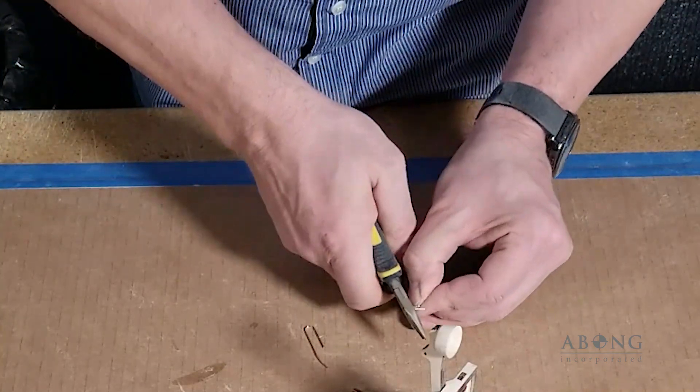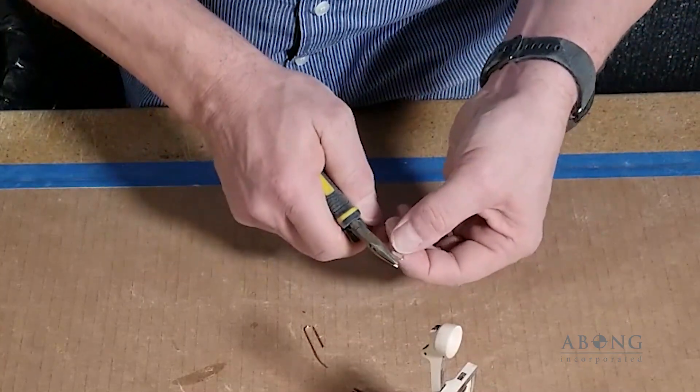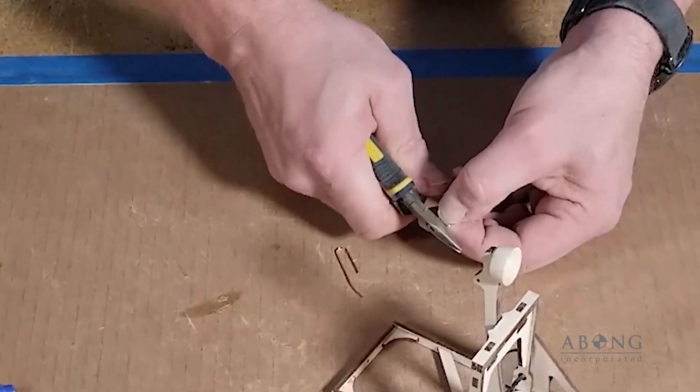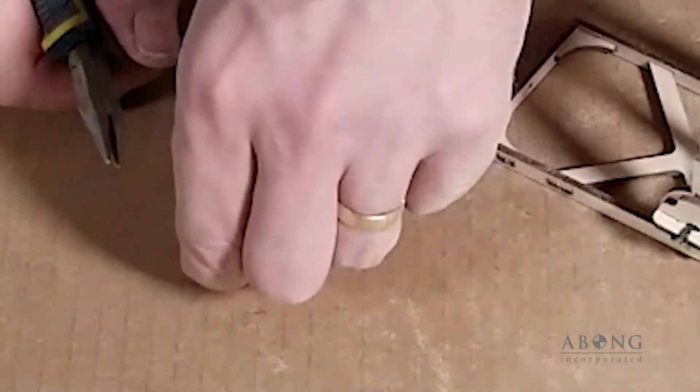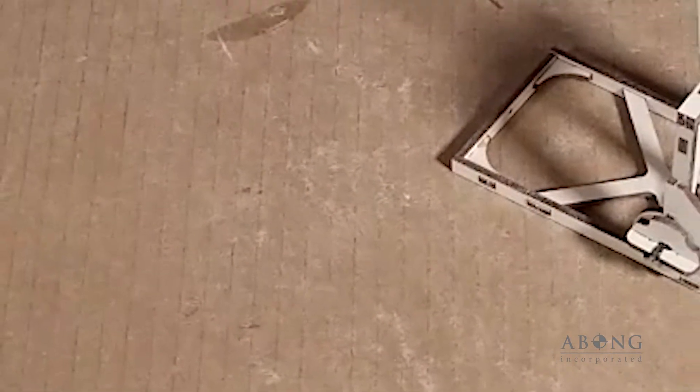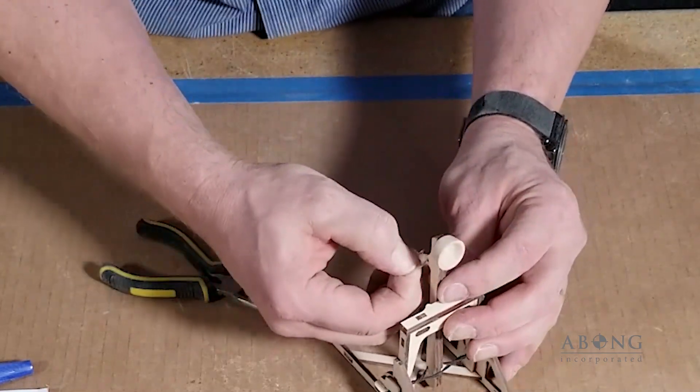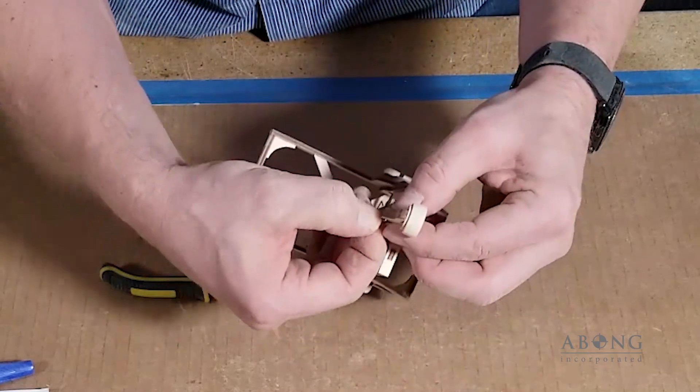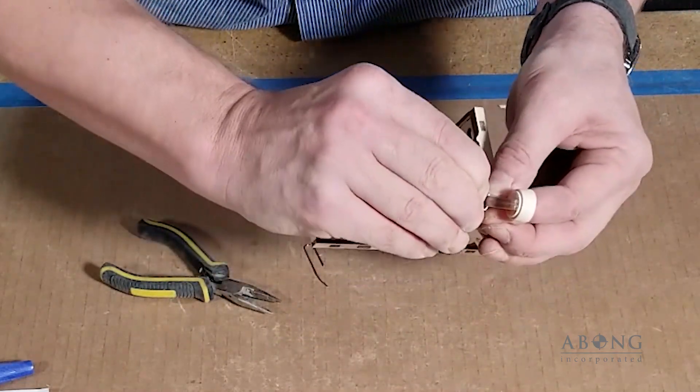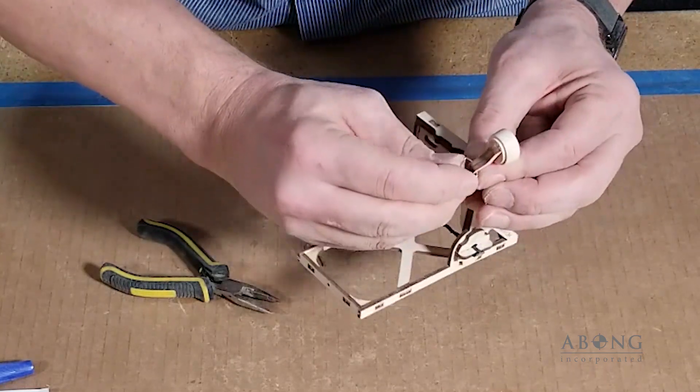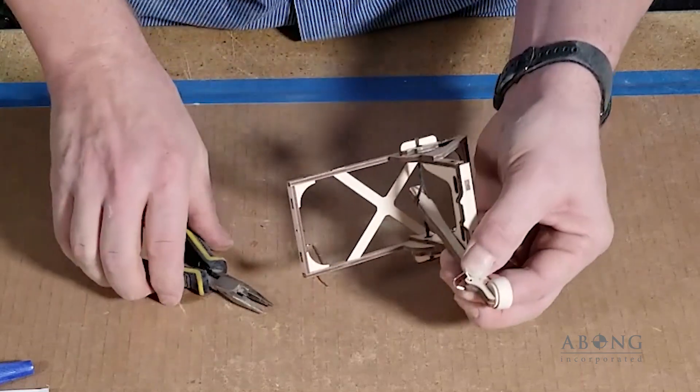And snip off those two little ends. Careful you don't get that in your eye. Perfect. So you can see a little sort of a D ring that we've formed there. Now we're going to open that D ring up and feed it through the hole in the arm on the underside of the throwing arm.